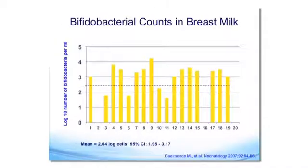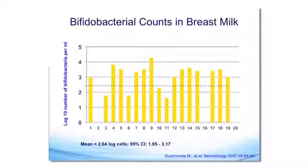The other source of bacteria is what continues coming through the mouth of the infant. Almost independent of geography, there seems to be a tendency, with wide variations, for certain genera — specifically bifidobacteria — to show differences between babies who receive breast milk versus not.